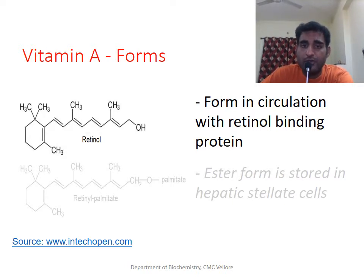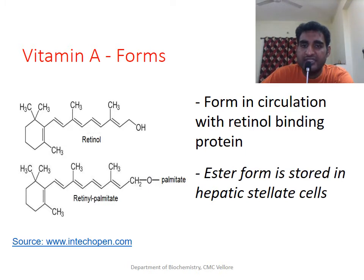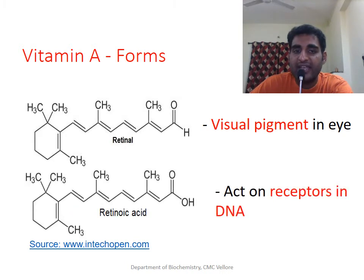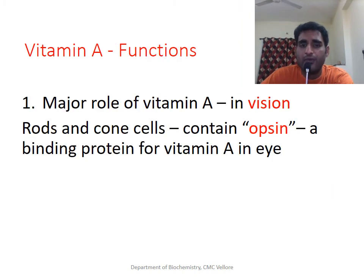Retinol, the alcohol form, is the major form of Vitamin A in circulation and is carried by retinol-binding protein. The ester form of retinol is stored in stellate cells of the liver for future use. Retinal, the aldehyde form, is the light-sensing pigment of the eye. Retinoic acid, the acid form, acts on nuclear receptors and affects gene expression.